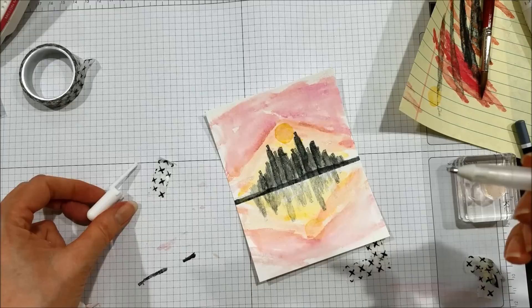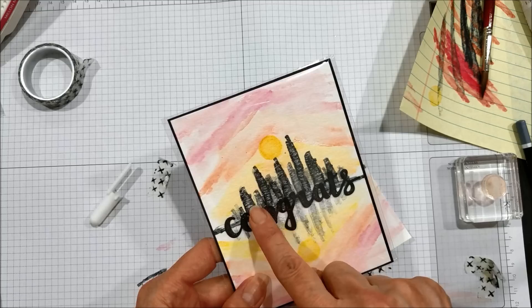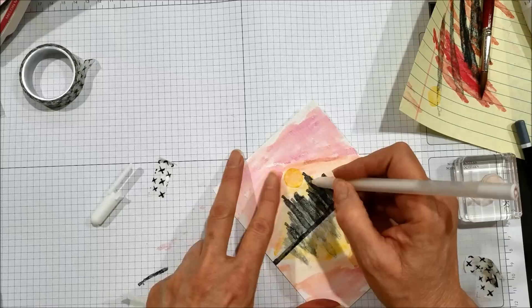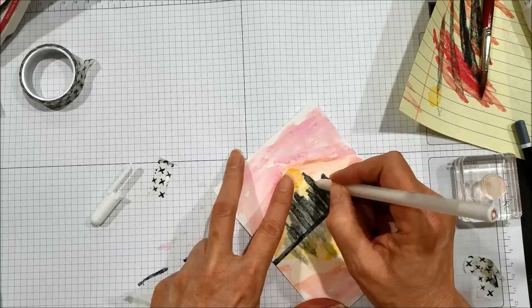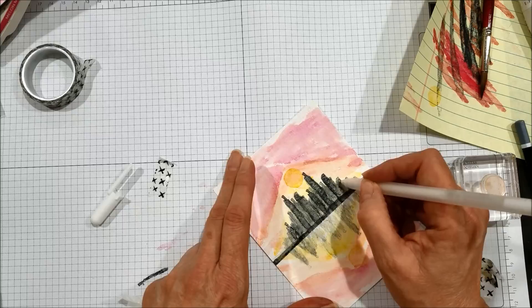This is just an ordinary white gel pen. I think this is a Jelly Roll pen. What I'm after here is I want there to be the suggestion of windows. You don't have to worry about this being perfect. You're just putting lines in, just little haphazard lines. We'll do this on the top part and in the reflection.